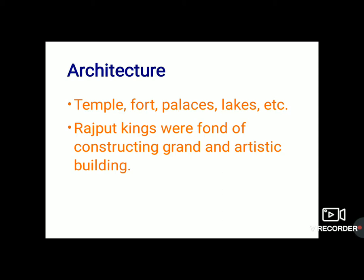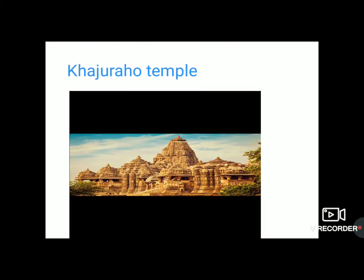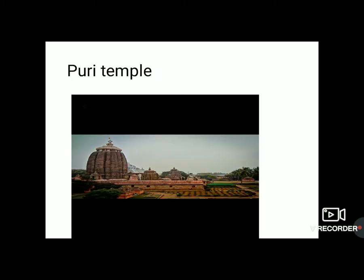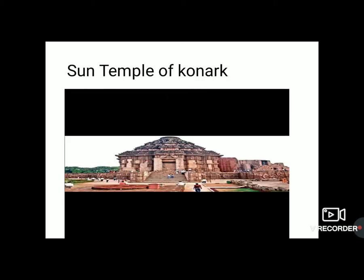Among these temples, the Khajuraho temple in Madhya Pradesh and the Puri temple of Lord Jagannath are famous for their architecture and sculpture. The third is the Sun temple of Konark, which was also beautiful during that time.